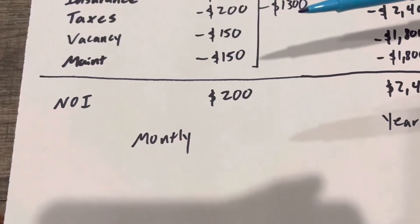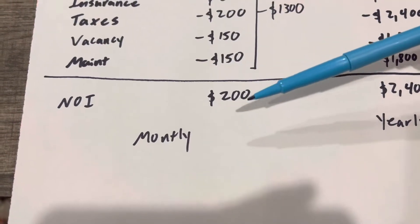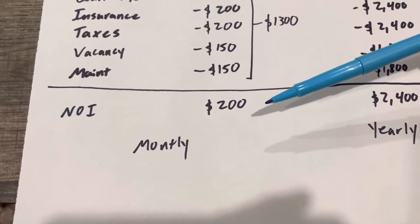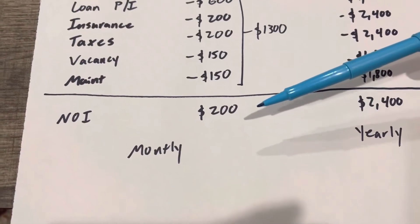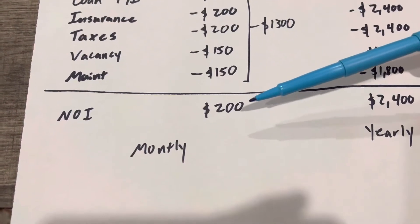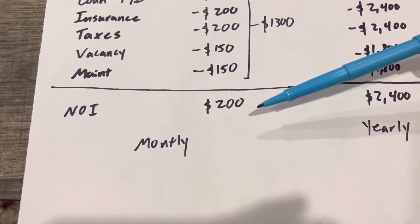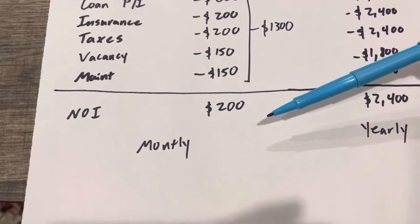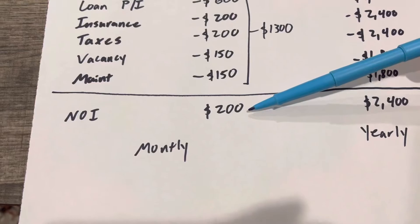Generally speaking, $150 to $200 is a pretty good real estate deal. If you have a $300 monthly NOI cash flow, that's an amazing, incredible deal.